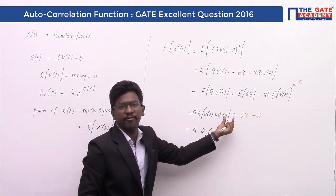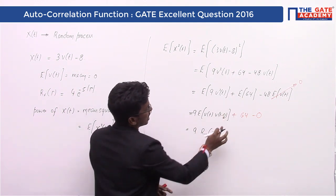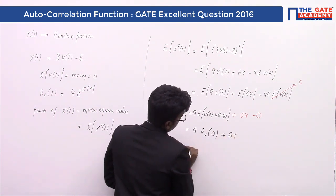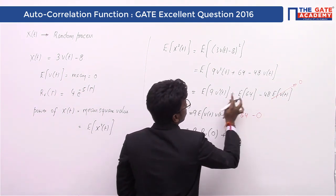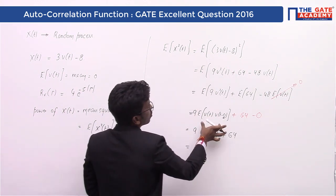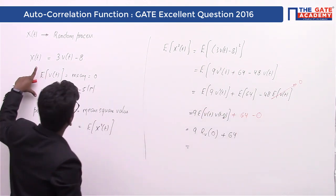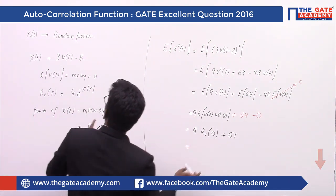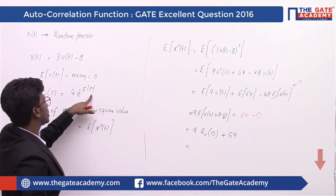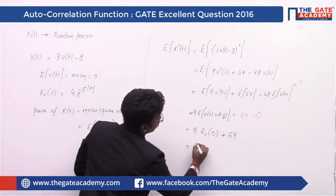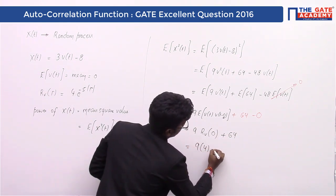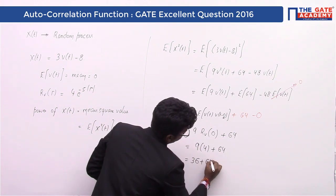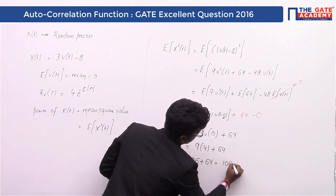So Rv(0) is the autocorrelation of v(t) within the same random process at a shift of zero. These two things — E[v(t)] = 0 and E[v²(t)] = Rv(0) — are all that's needed. Substituting τ = 0 into Rv(τ) = 4·e^(-5|τ|): e^0 = 1, so Rv(0) = 4. Therefore, power = 9·4 + 64 = 36 + 64 = 100 watts.